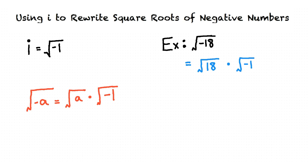Yes, that is correct. Since we know that 9 times 2 is 18 and 9 is a perfect square, our next step is to write our problem as square root of 9 times square root of 2 times square root of negative 1. Then we simplify as much as possible.